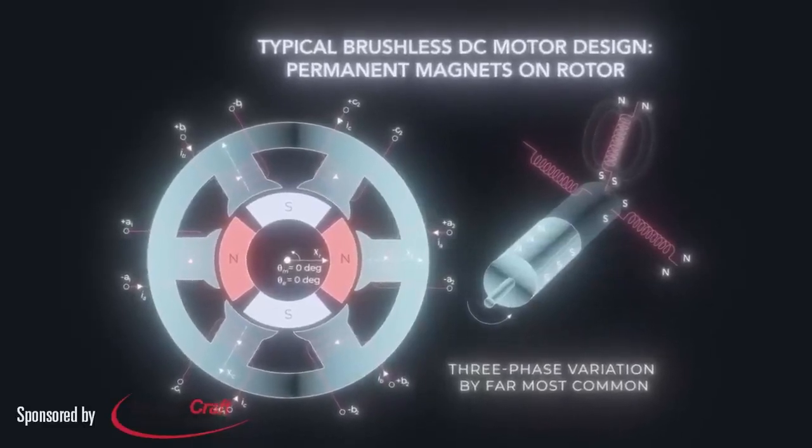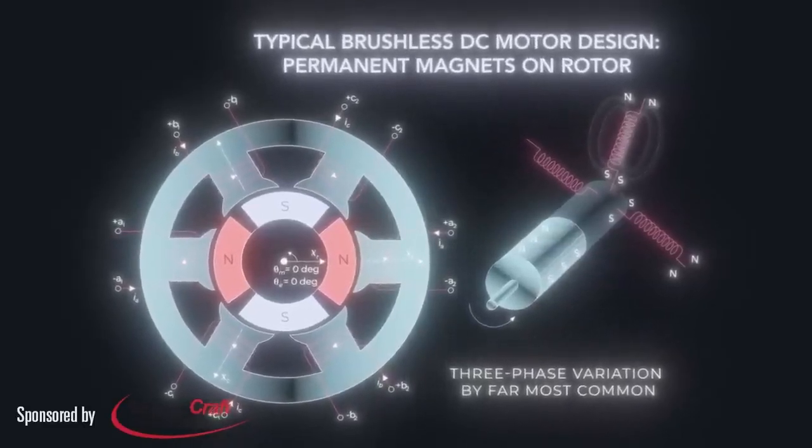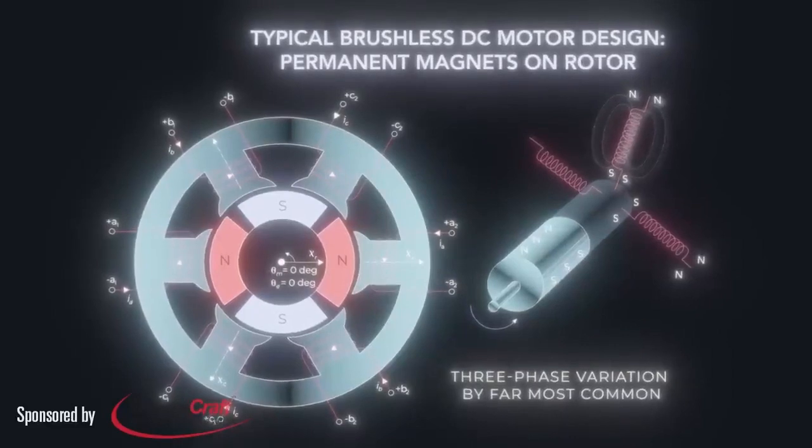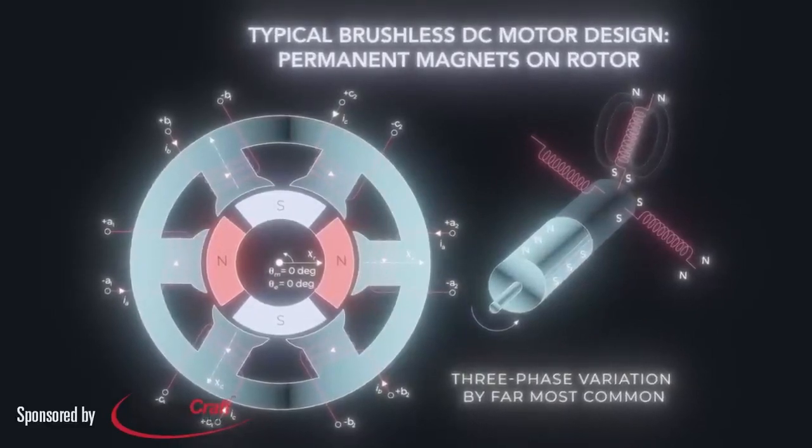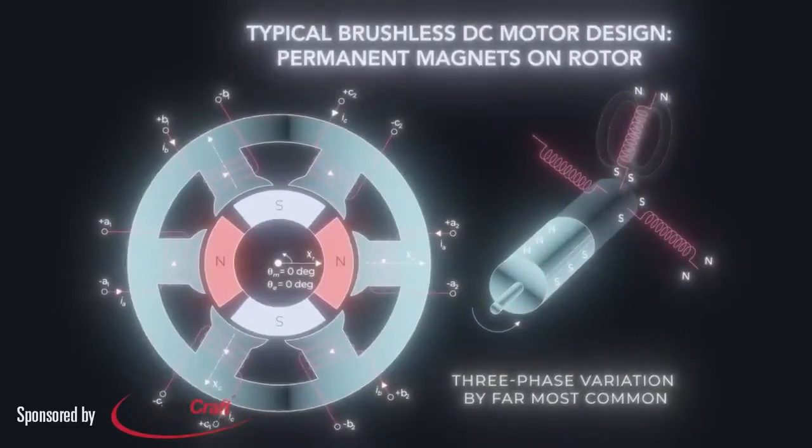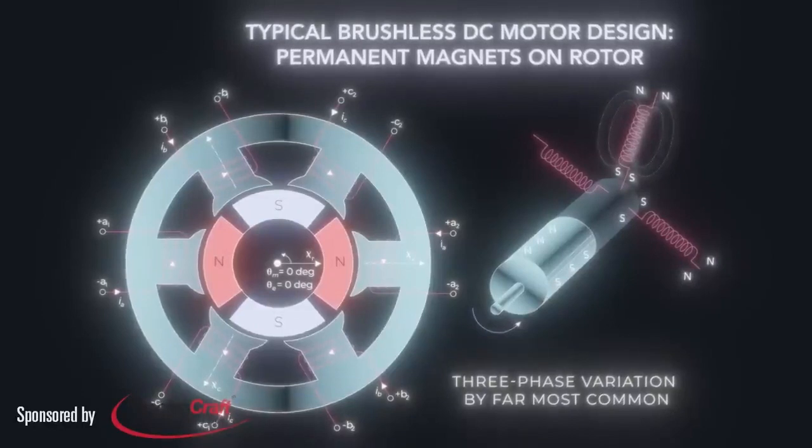One simple way to control brushless motors is with trapezoidal commutation. Here, current is metered through the motor's phases two at a time, with the third unpowered. Hall sensors track rotor position and enable the switching between phases in the correct sequence.